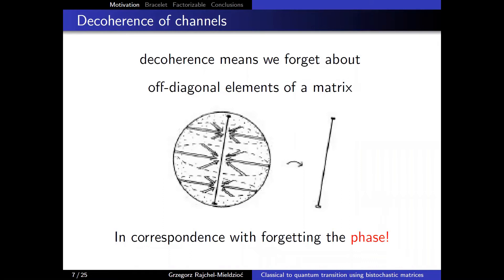To motivate our research from another perspective, consider decoherence. Decoherence can be described in many ways. For simplicity, let us say that decoherence means a specific quantum channel cannot be distinguished from another because of some classical dissipation, resulting in a classical channel at the end.